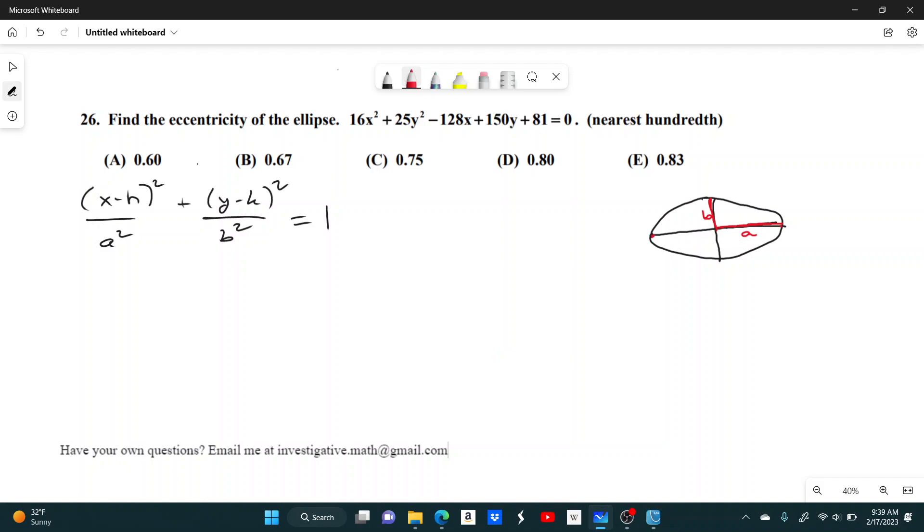So we just have to get it into this form, and then we can use these two values in order to solve for the eccentricity, and we'll get to that later. So to get it into this form, we're going to have to do some completing the square.